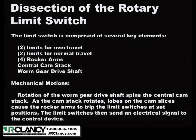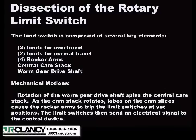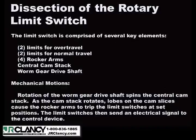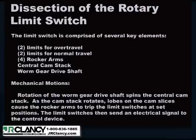The GE Rotary Limit Switch is comprised of several key elements: two limits for over-travel, two limits for normal travel, four rocker arms, a central rotating cam stack, and a worm gear drive shaft. Rotation of the worm gear drive shaft spins the central cam stack. As the cam stack rotates, lobes on the cam slices cause the rocker arms to trip the limit switches at set positions. The limit switches then send an electrical signal to the control device.